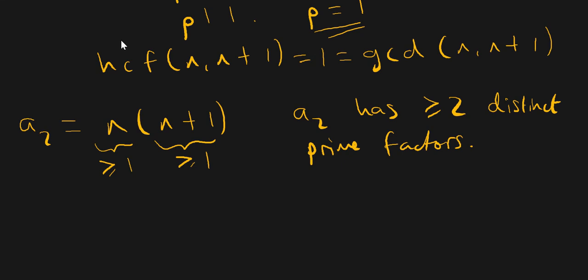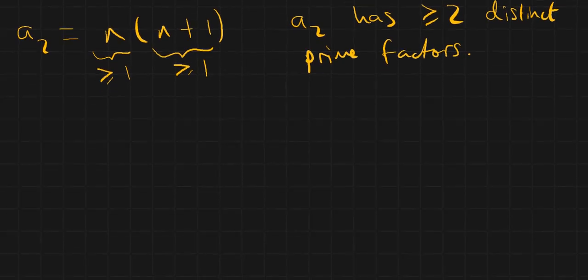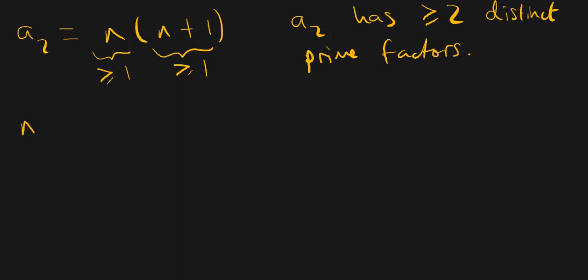Now I want to define a3. What I'm going to do is take a2 — which is n times n plus one — and add one to it. So I'm considering n times n plus one as my first number, and n times n plus one plus one as my second number — exactly the same number as before, plus one.